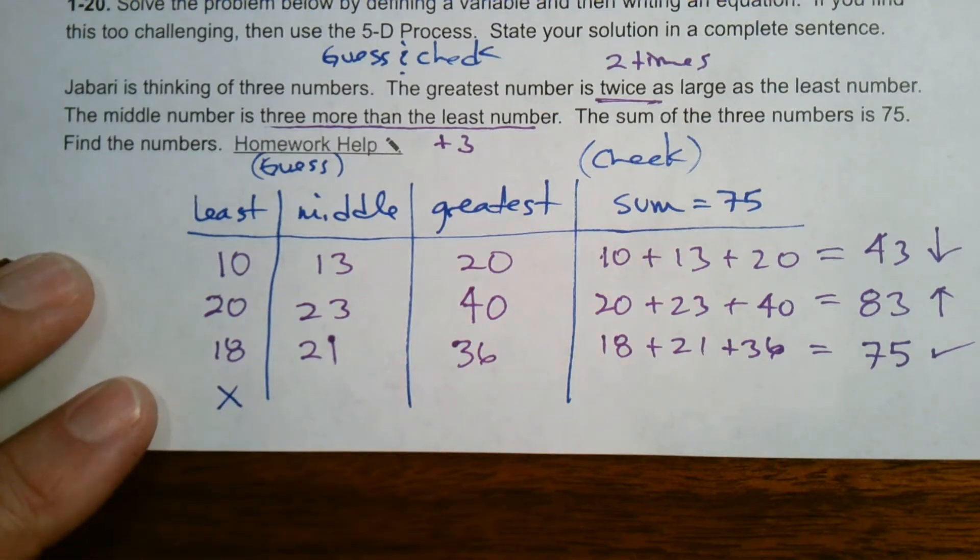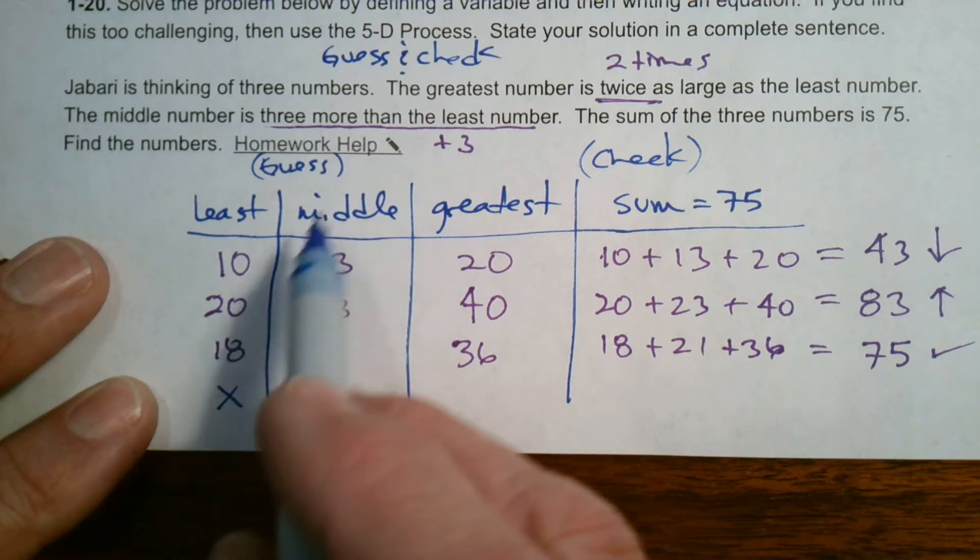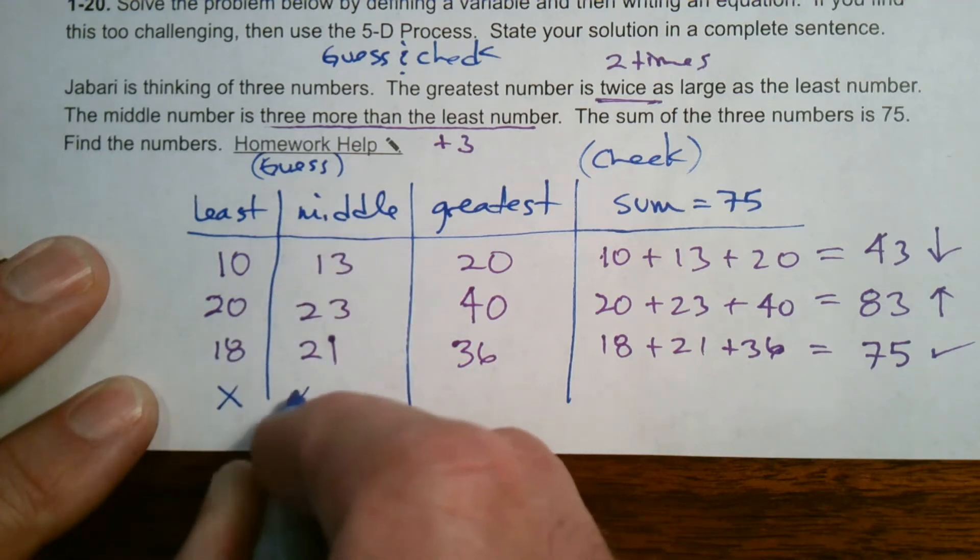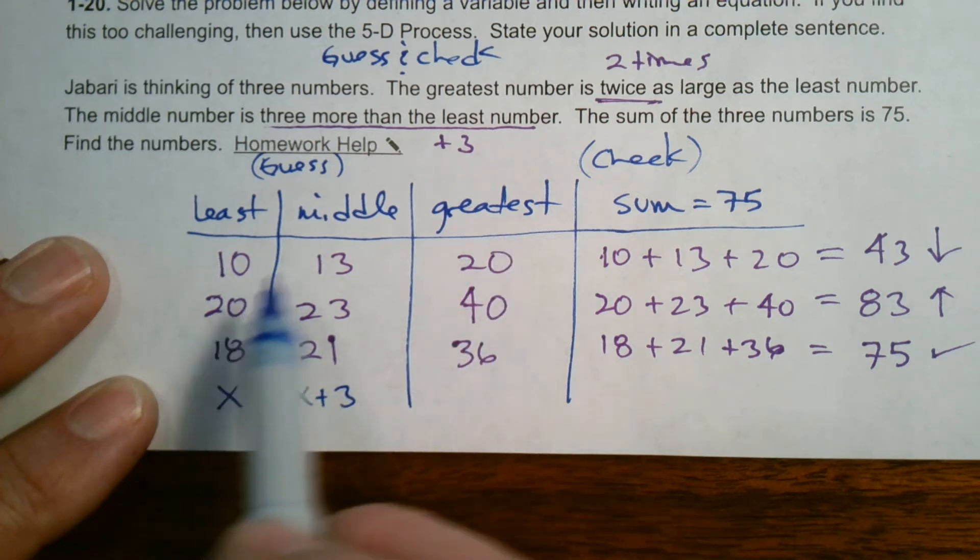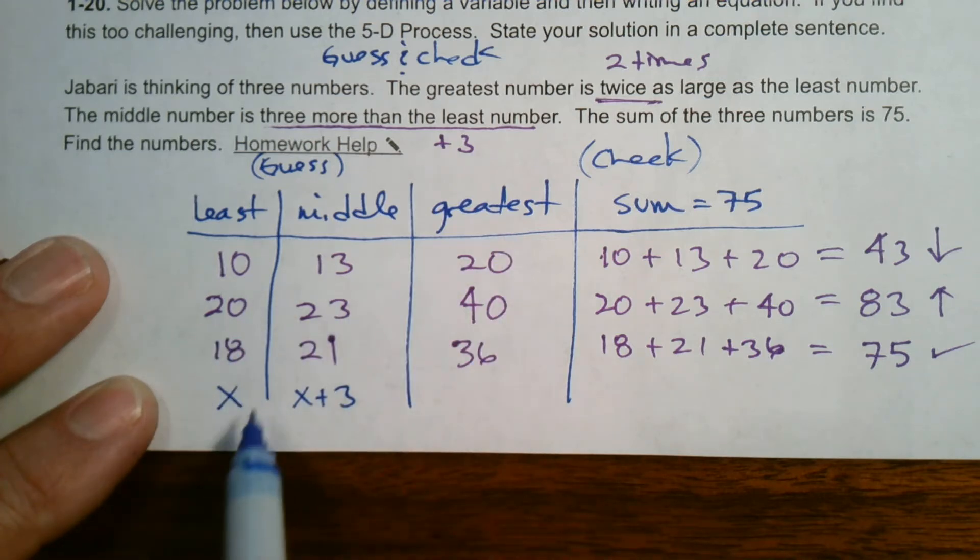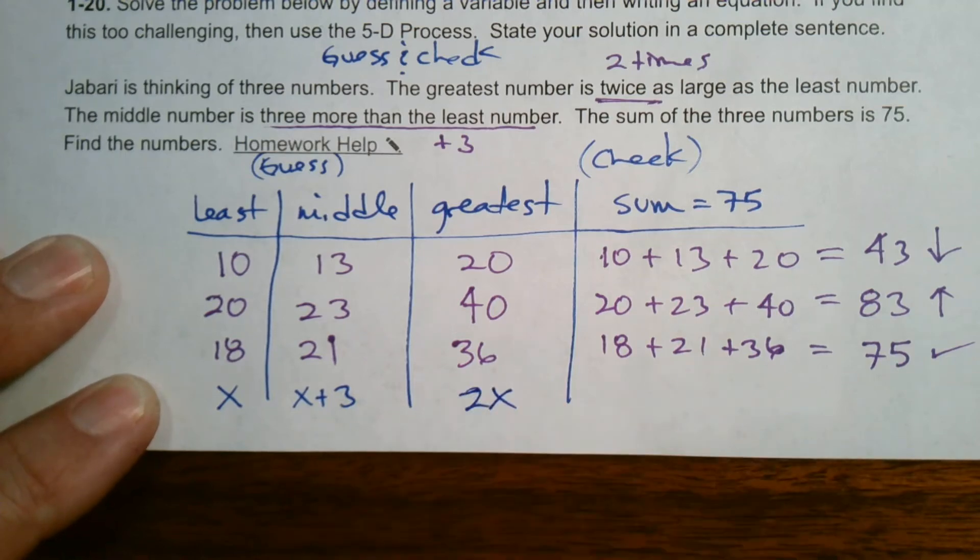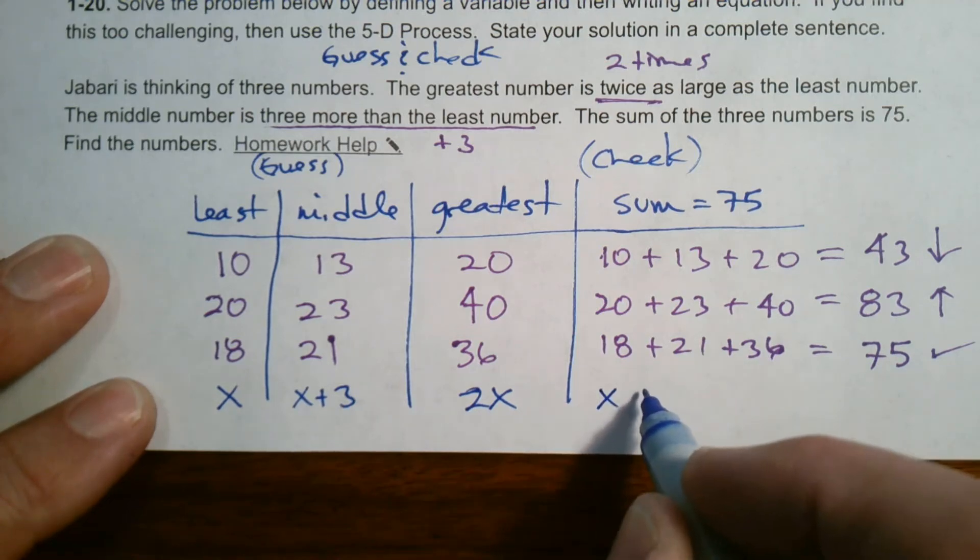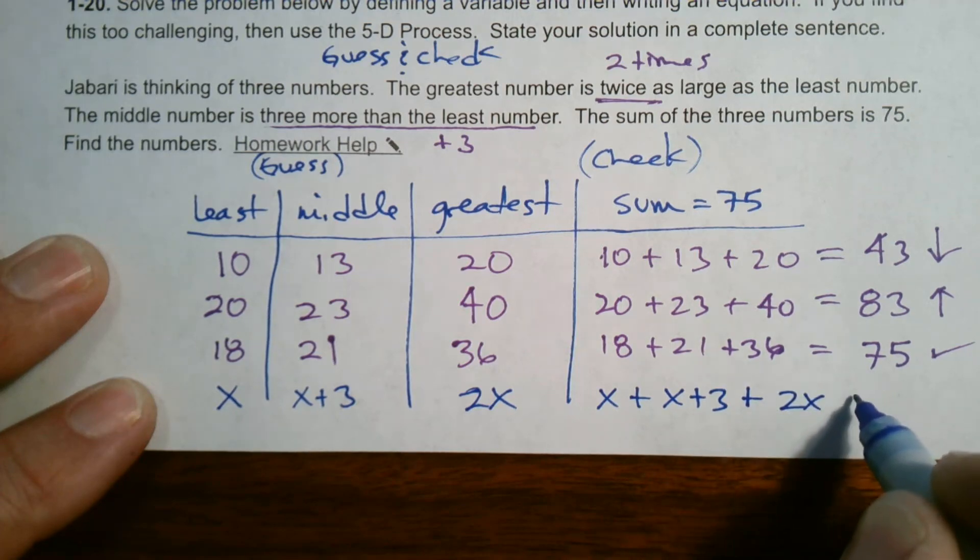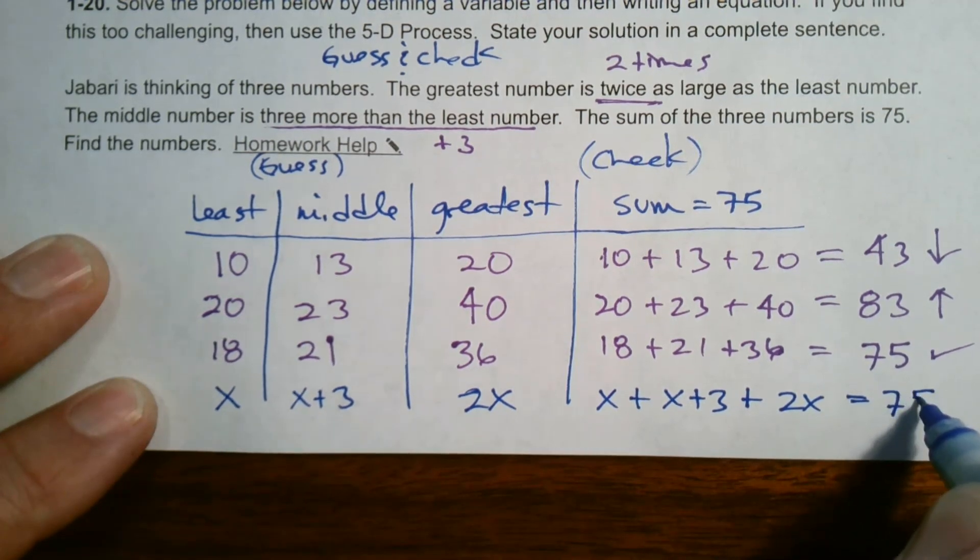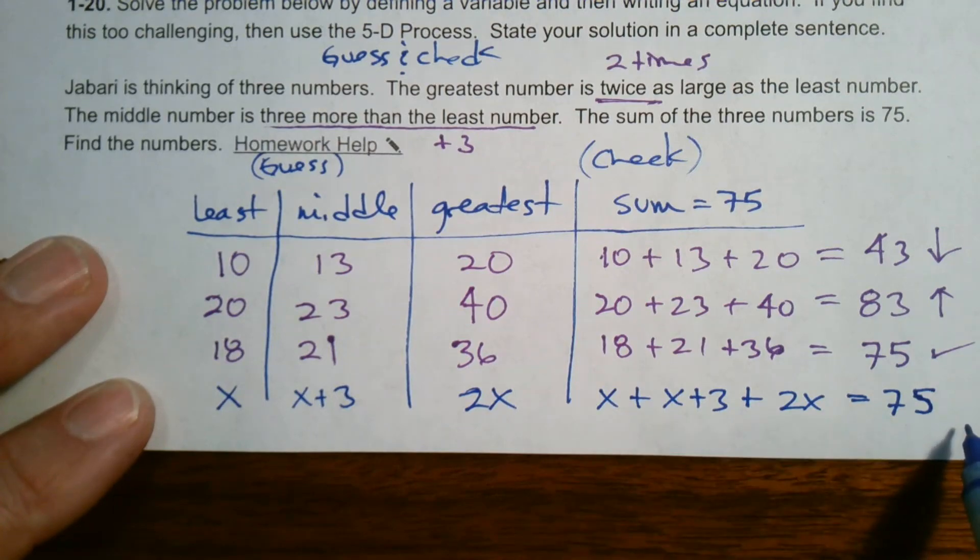To find the middle, I had to take the least and add three, so it's X plus 3. The greatest was twice the least, so that's 2X. The equation would be X plus X plus 3 plus 2X equals 75, and I can solve that equation.